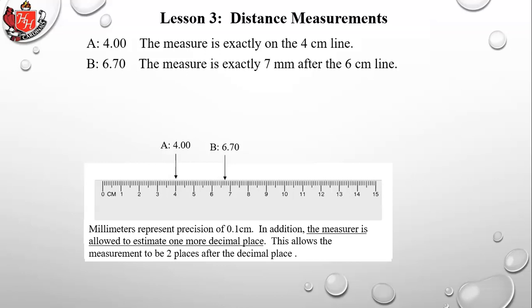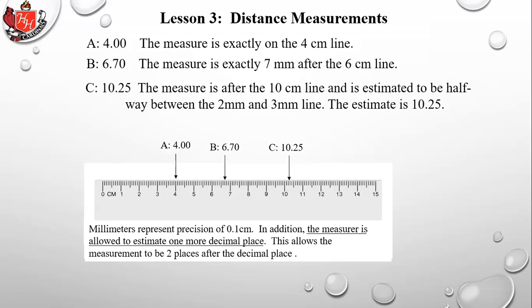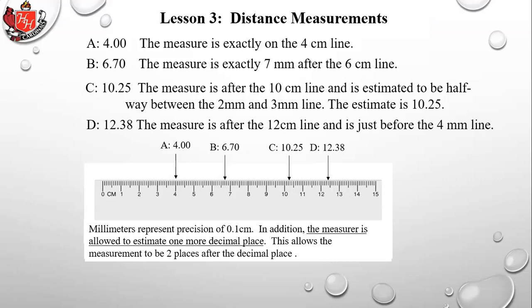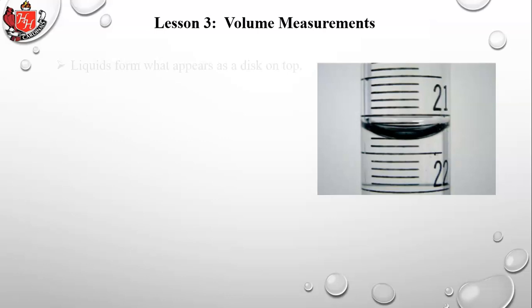If the measure is exactly on the 4 cm line, record 4.00. If it's exactly on the 7th millimeter line past 6 cm, record 6.70. If it's estimated halfway between the 2nd and 3rd millimeter lines past 10 cm, record 10.25 — you're sure it's between 2 and 3 but you estimate the 5. If it's just before the 4 mm line past 12 cm, record 12.38 — your best estimate for that last digit.